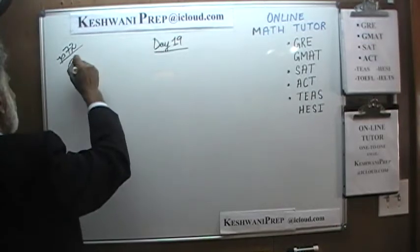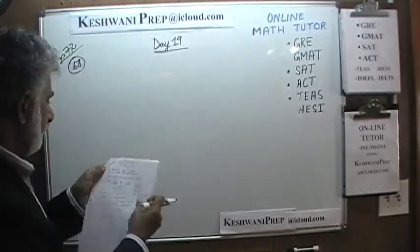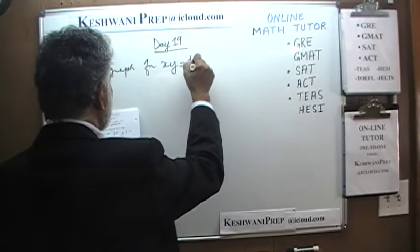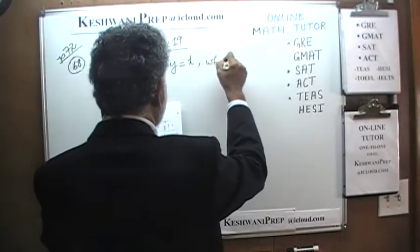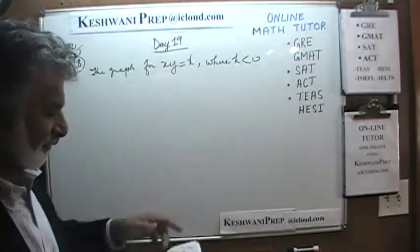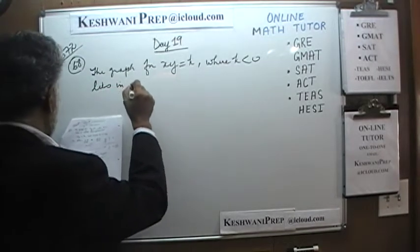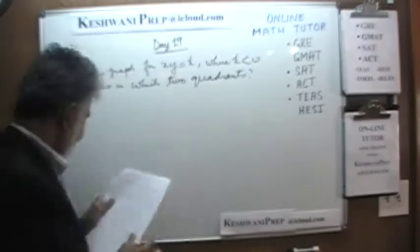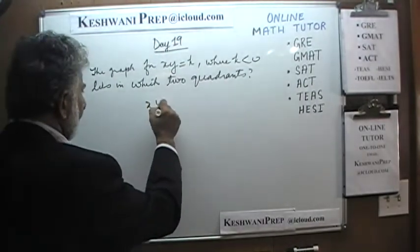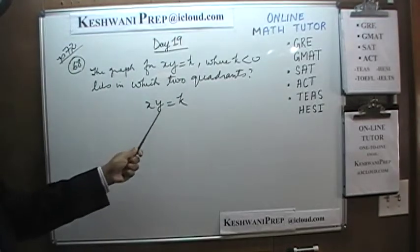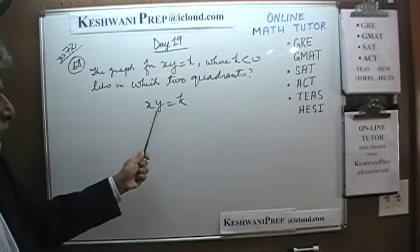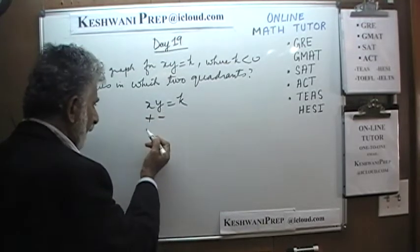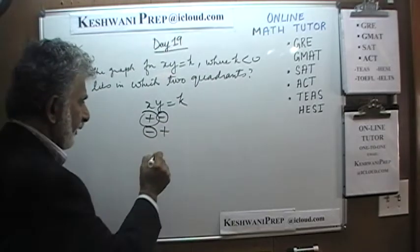Number 68 says: the graph for x times y equals k, where k is less than 0 — meaning k is negative — lies in which two quadrants? Very straightforward. Since k is negative, the only way the product of the x-coordinate and y-coordinate of a given point is going to be negative is when one is positive and the other is negative — or when x is negative and y is positive.